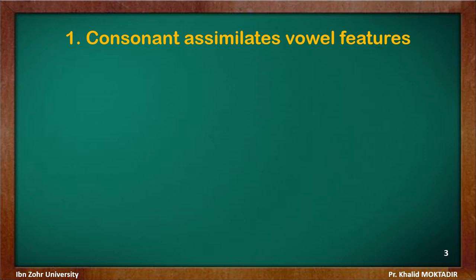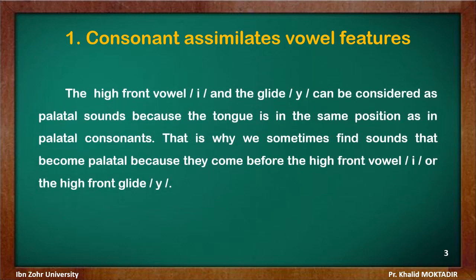Now we look at how a consonant assimilates vowel features. Sounds are articulated with the tongue touching the hard palate in exactly the same position as in palatal consonants. That's why we sometimes find sounds that become palatal because they come before the high front vowel E or the high front glide Y.